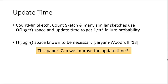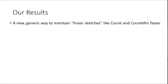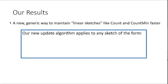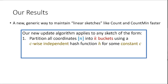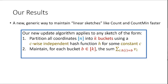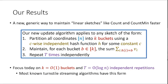We give a new generic way to maintain so-called linear sketches — like the count sketch and count-min sketch — faster. Our new update algorithm can quickly implicitly maintain any sketch that partitions coordinates into k buckets using a c-wise independent hash function for constant c, maintains per-bucket sums, and repeats t times independently. Almost every known turnstile streaming algorithm is of this form, typically with k constant and t = log n.